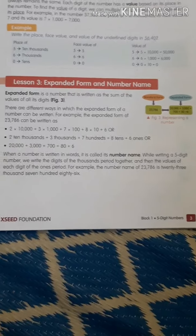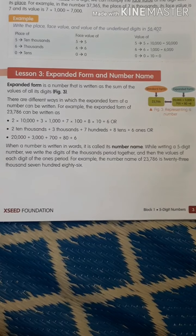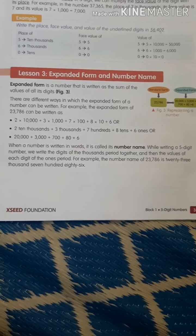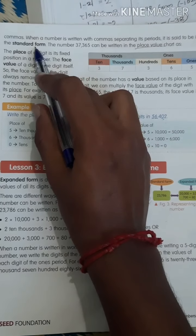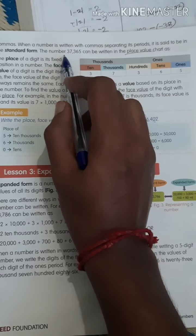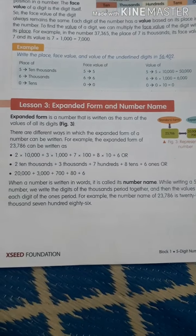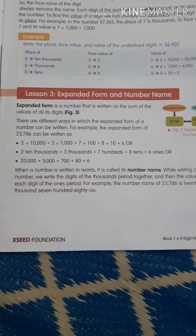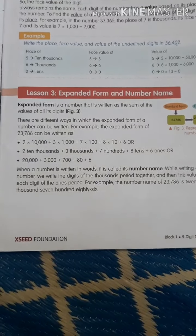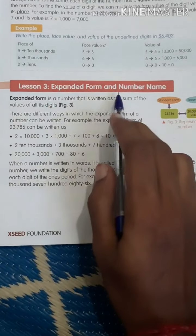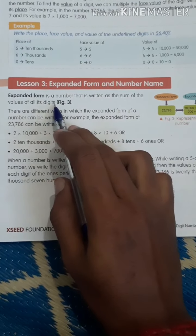Lesson 2 is over. We will go to Lesson 3: Expanded Form and Number Name. You already know how to write standard form — using a comma when writing. Expanded form is a number written as the sum of values of all its digits.